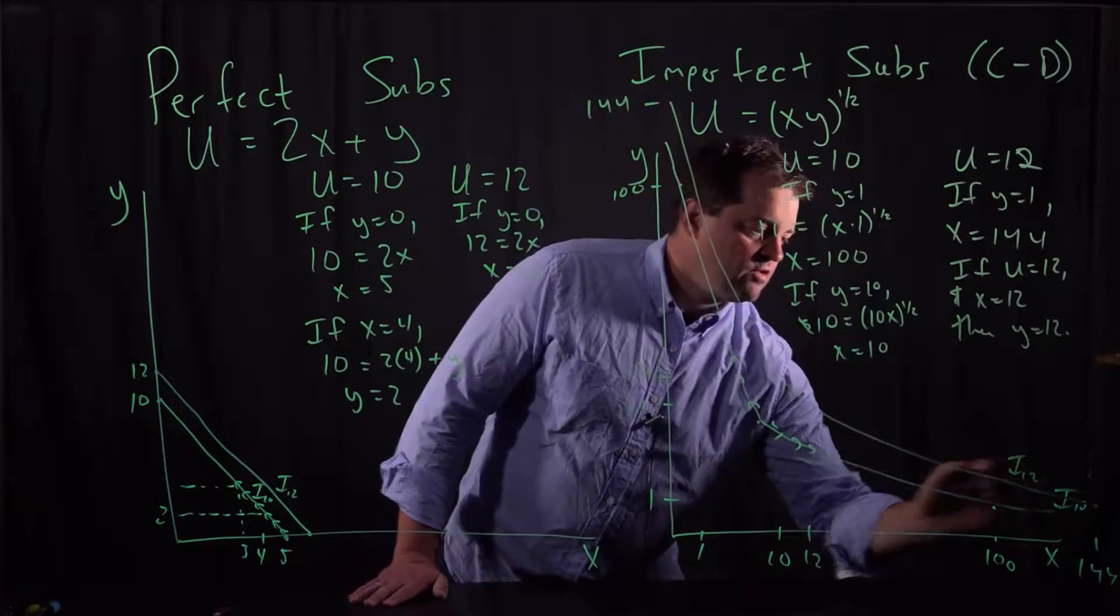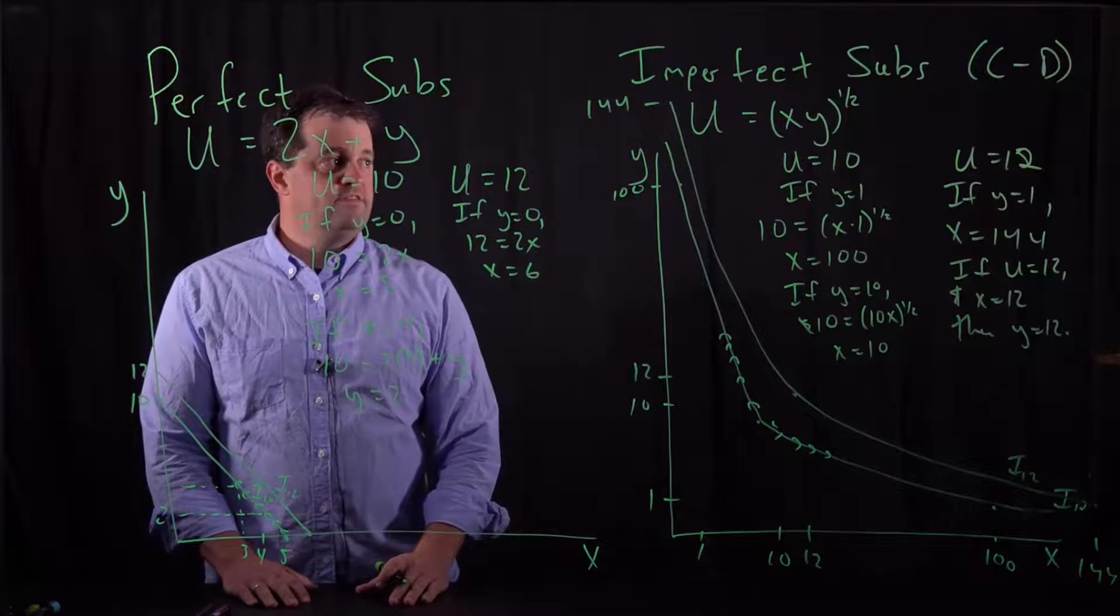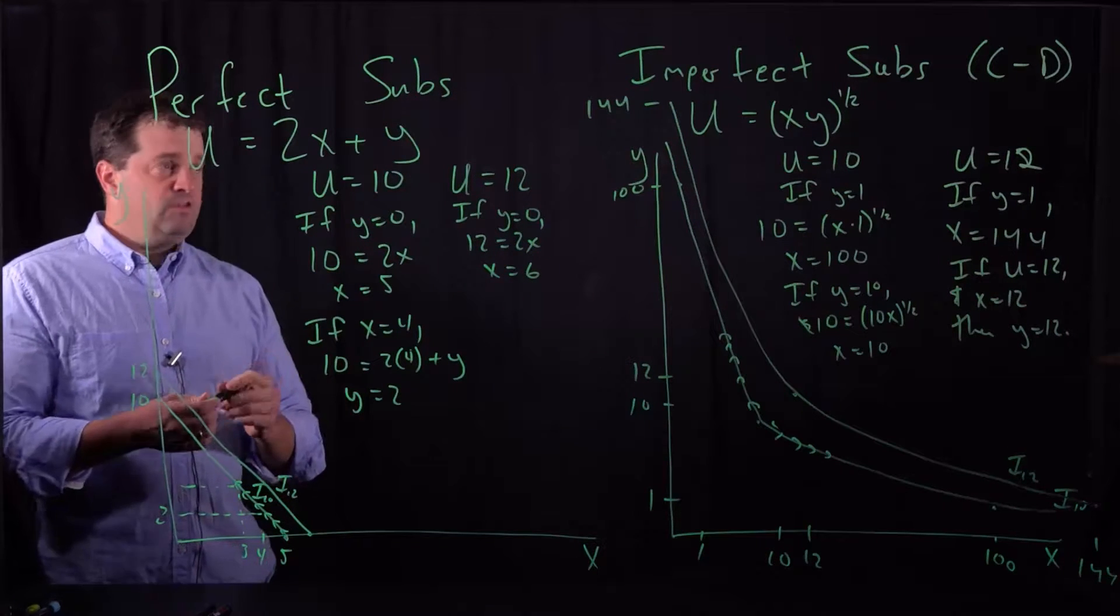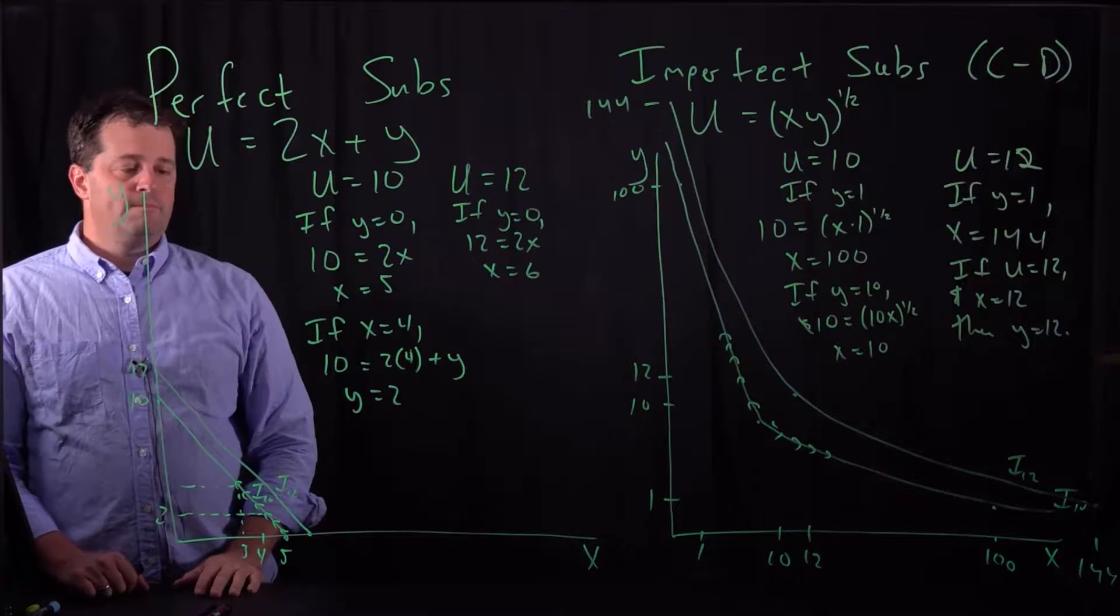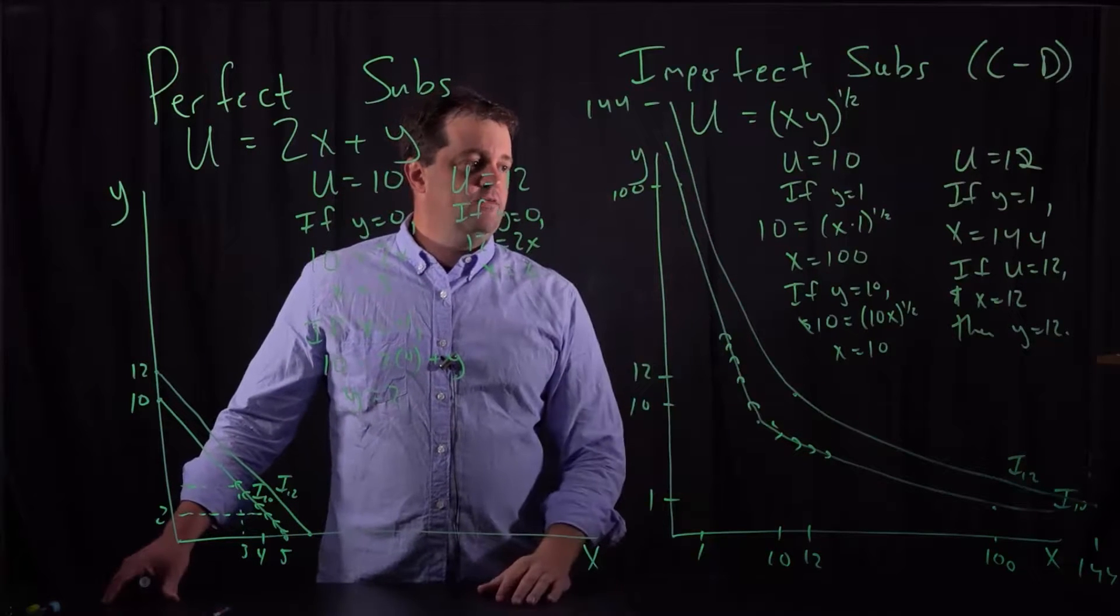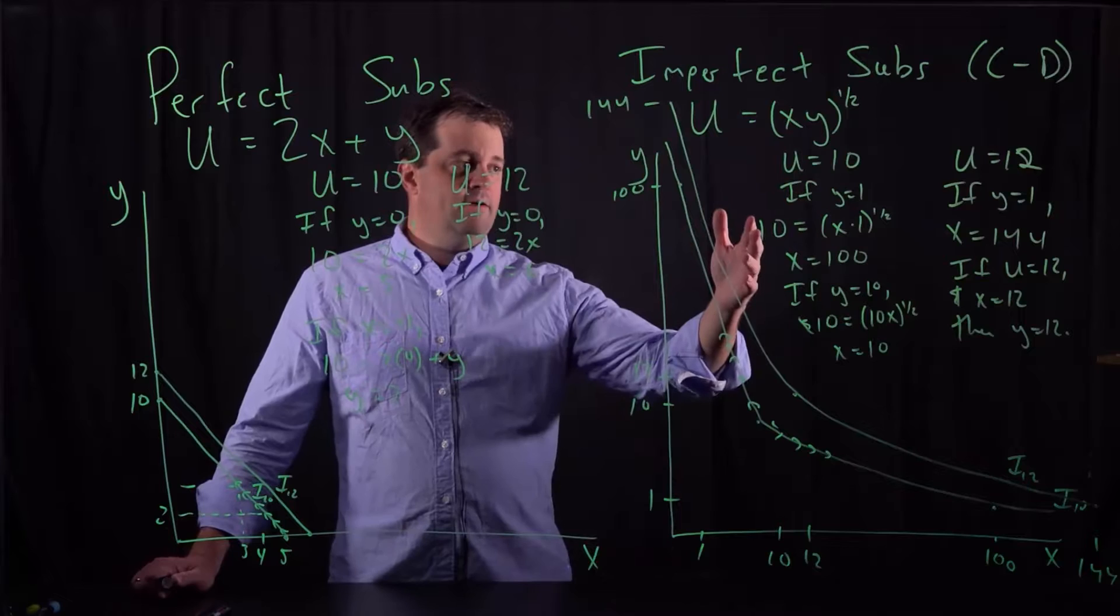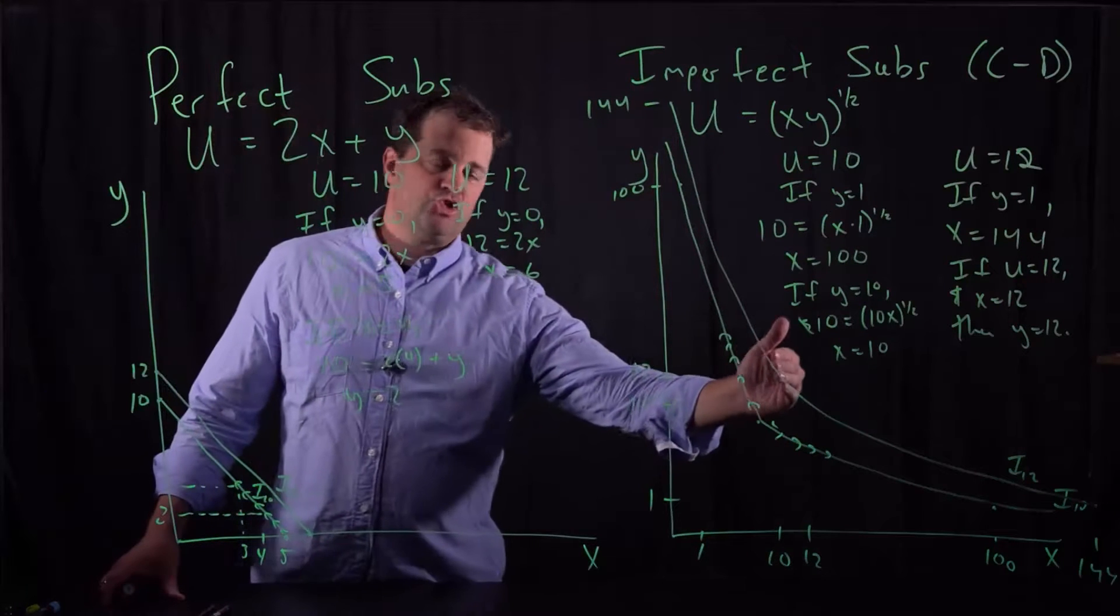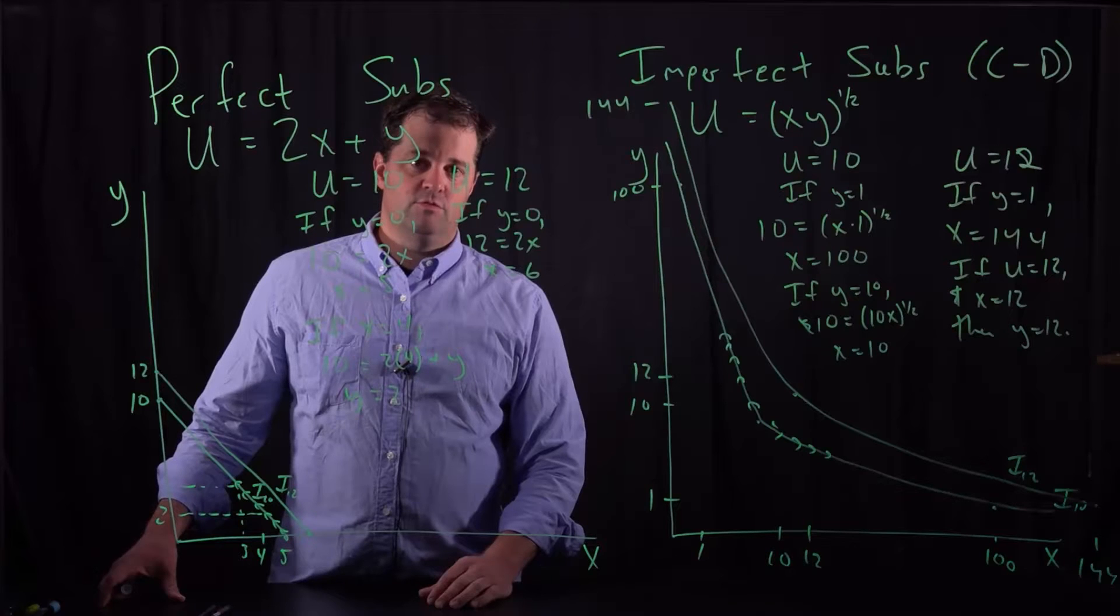And I've got a new indifference curve that I've moved to from the earlier one where utility was just equal to 10. So once again, we've shown the difference between these two different kinds of utility functions. Perfect substitutes, linear in X and Y. And then with imperfect substitutes, there's this curvilinear structure that we see here. Because of diminishing marginal utility, we're going to get that curvilinear structure there. But with both of them, we've shown how movements can occur along an indifference plane and how we can shift to a higher indifference plane that shows a larger amount of utility from consuming X and Y.